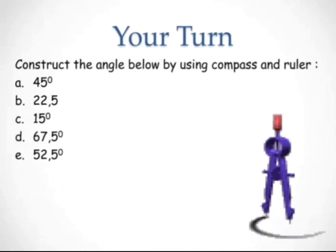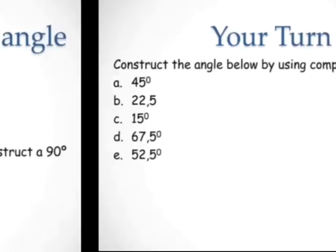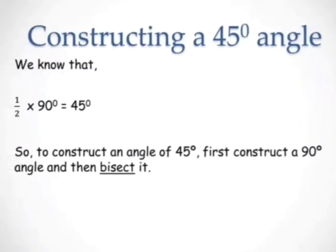Now we will construct an angle of 45 degrees. We know that 90 divided by 2 equals 45 degrees, which means 45 degrees is the bisect of 90 degrees.